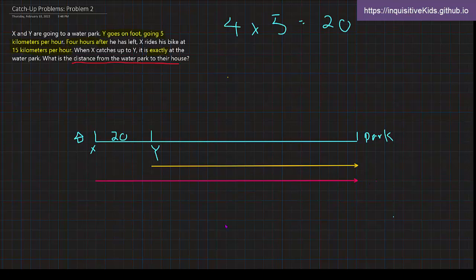So we're trying to find the distance from the house to the park. But wait, isn't that the exact same as the total distance X had walked? Exactly. So we need to find his distance, which means we'll need to know his time and his speed.